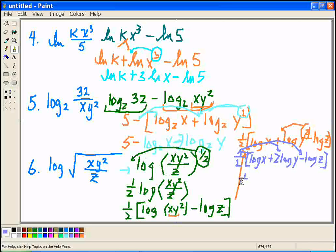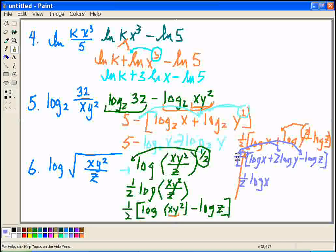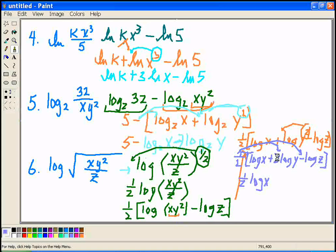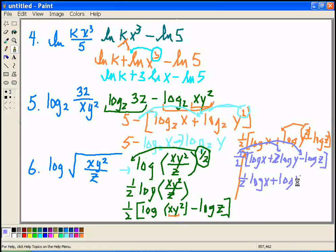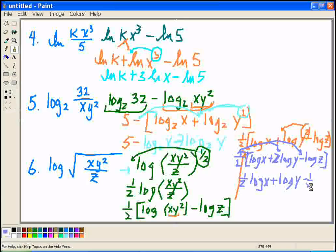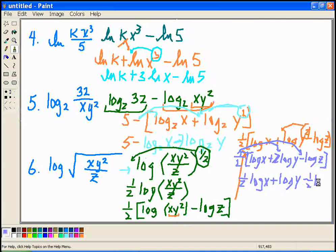So for my final answer, I'd have 1 half log x. But notice when I say 1 half times 2, they would cancel, and I'd just be left in this middle term with log y. And then my last term would be 1 half times minus log z, or minus 1 half log z.